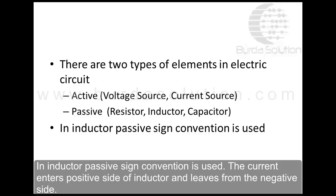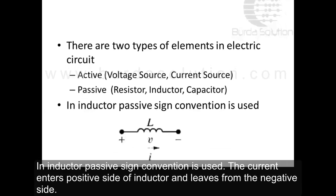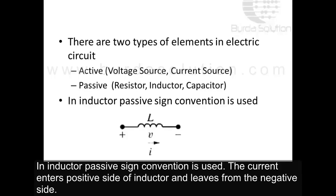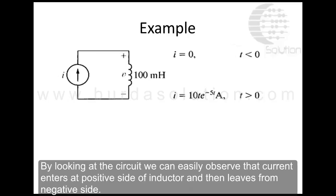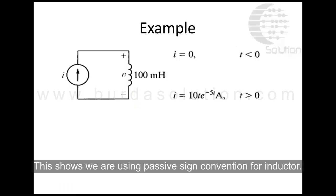In an inductor, passive sign convention is used. The current enters the positive side of inductor and leaves from the negative side. By looking at the circuit, we can easily observe that current enters at the positive side of inductor and then leaves from the negative side. This shows we are using passive sign convention for inductor.